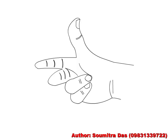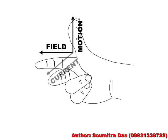If the forefinger points in the direction of the magnetic field, thumb in the direction of motion of the conductor, then the central finger points in the direction of the current induced in the conductor.